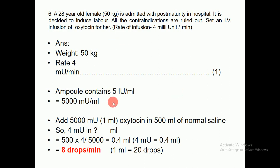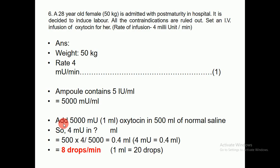As we know, the oxytocin ampoule content is 5 IU per ml. This means the total number of milli-units per ml is five thousand. So 1 ml oxytocin contains 5000 milli-units per ml. We will add 1 ml of oxytocin to 500 ml of normal saline — in simple words, dilute 1 ml oxytocin in 500 ml of normal saline.